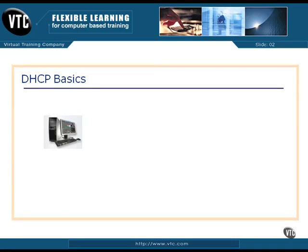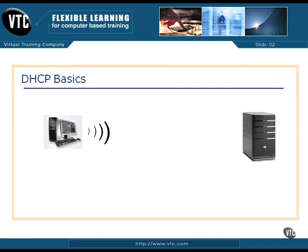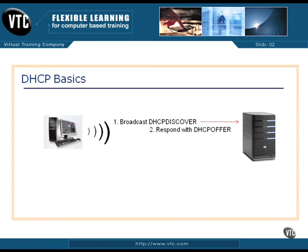A user comes in, flips their computer on, and as it boots up, the DHCP server is out on the network — either on the same subnet or reachable via a relay agent. As the client comes up, it broadcasts a DHCP Discover packet. You need to know these four steps for the exam. The first step is the client machine broadcasts a DHCP Discover message.